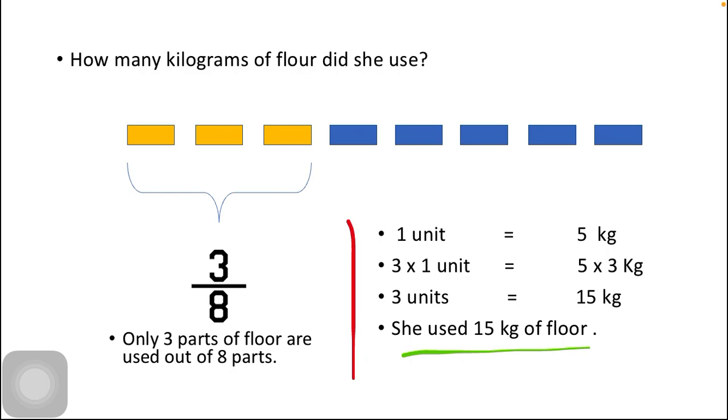1 unit equals 5 kg, which we have taken out from the last slide. Only 3 parts of the floor are used, so we have to multiply the numerator 3 with the units on both sides.